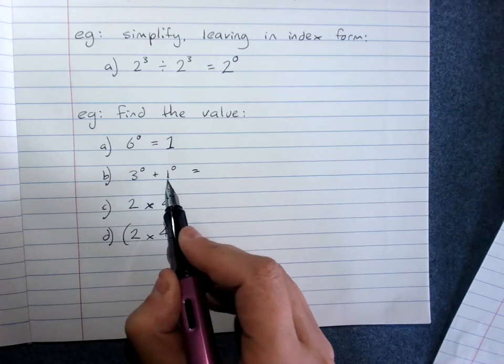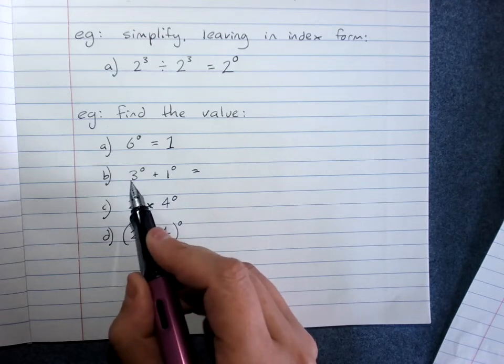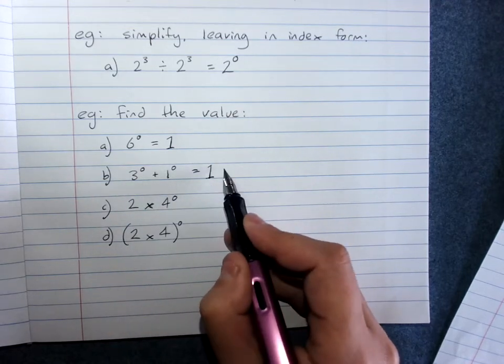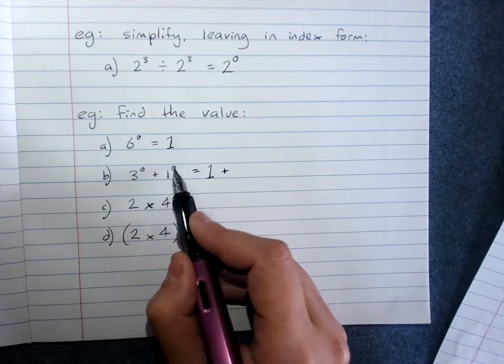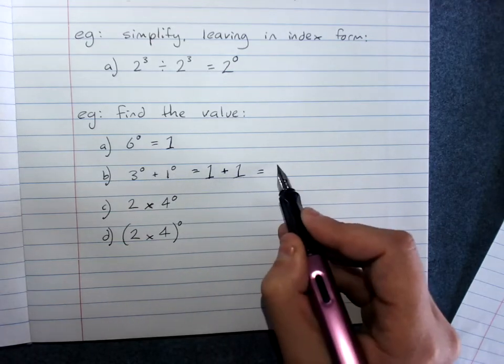3 to the power of 0 plus 1 to the power of 0: 3 to the power of 0 plus 1 to the power of 0 is 1, I've got 2.